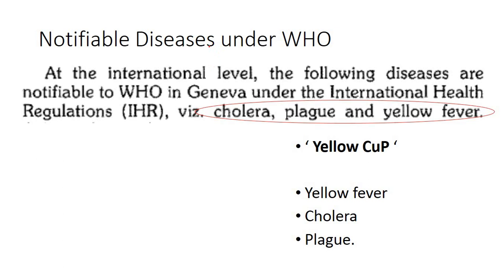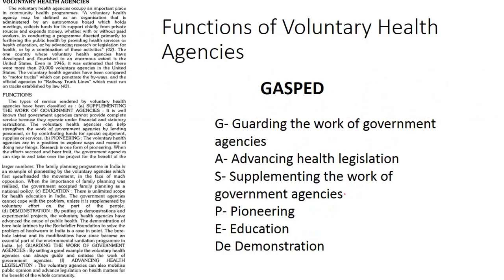Notifiable diseases under WHO is a common exam and viva question. The diseases notifiable to WHO in Geneva under International Health Regulations can be remembered with the mnemonic 'Yellow CUP': Yellow = Yellow fever, C = Cholera, P = Plague. Yellow fever, Cholera, and Plague.